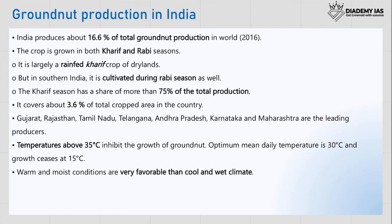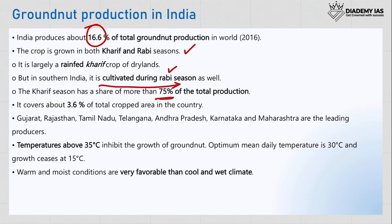Next is groundnut production. India has produced about 16.6 percent of total world groundnut production. The groundnut crop is produced in both Kharif and Rabi seasons — it is largely a rain-fed Kharif crop of drylands, but in southern India it is cultivated during the Rabi season. The Kharif season has a share of more than 75 percent of total production and covers 3.6 percent of the total cropped area. The largest groundnut producing states are Gujarat, followed by Rajasthan, then Tamil Nadu.